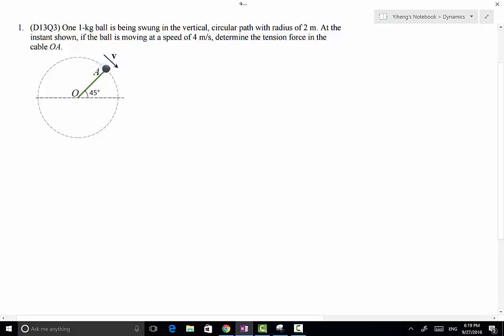So we're going to start with the free body diagram of this ball. Because the motion is in vertical plane, therefore it is subjected to weight, which equals to mg, which is 1 times, because its mass is 1 kilogram times 9.81. So that equals to 9.81 in the unit of Newton.